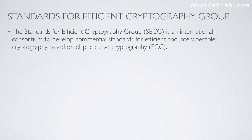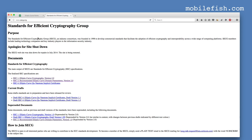The Standards for Efficient Cryptography Group is an international consortium to develop commercial standards for efficient and interoperable cryptography based on elliptic curve cryptography. The SECG website is www.secg.org. The two documents we are interested in are: Standards for Efficient Cryptography Part 1 and Standards for Efficient Cryptography Part 2.